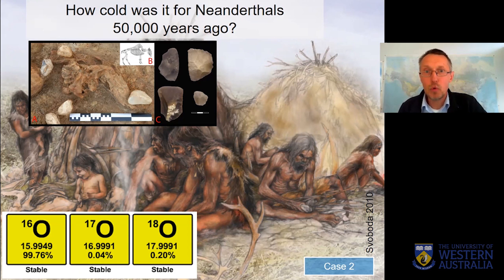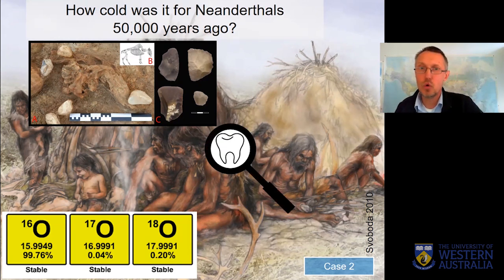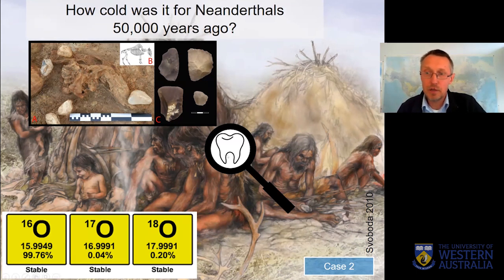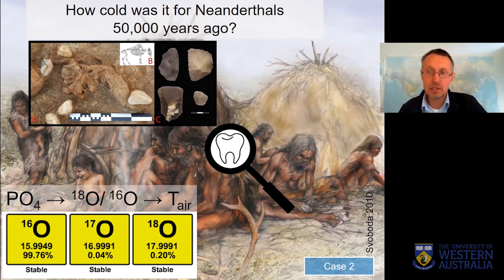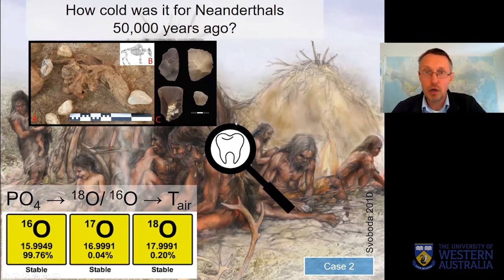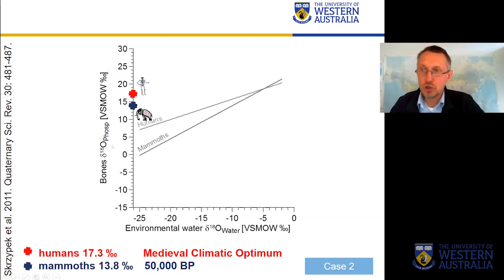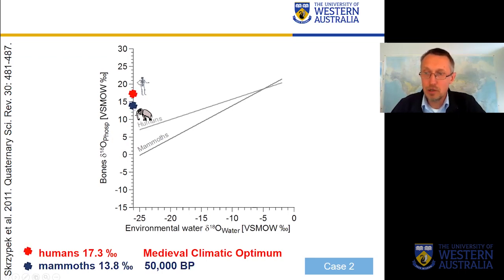What is the process? First, we need a good sample. The best one would be tooth enamel — especially the enamel layer on the surface of the tooth. Having this, we can extract phosphates and analyze the stable isotope composition — the delta ¹⁸O, or the ¹⁸O to ¹⁶O ratio — to determine what the temperature was at the time when the Neanderthals were living. Here you can see this blue cross, which is delta ¹⁸O for phosphate from a mammoth tusk, 50,000 years old.